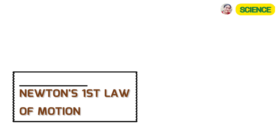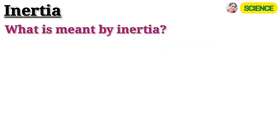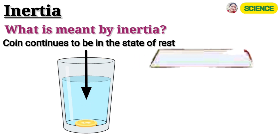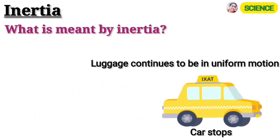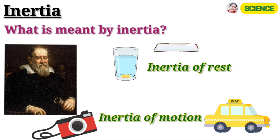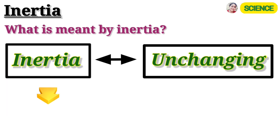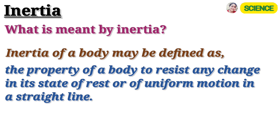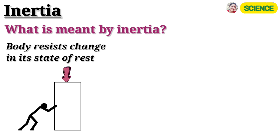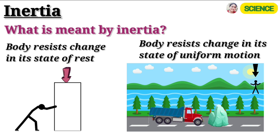Newton's first law of motion gives rise to the idea of inertia. We have seen that a body continues to be in the state of rest or of uniform motion unless some external force is applied to it. Galileo called this property of objects inertia. The word inertia, which means unchanging, has been derived from the Latin word inert. Therefore, inertia of a body may be defined as the property of a body to resist any change in its state of rest or of uniform motion in a straight line.